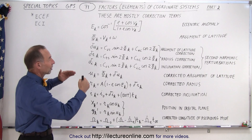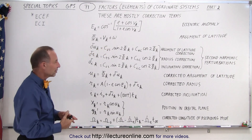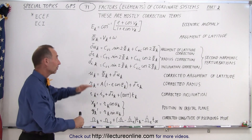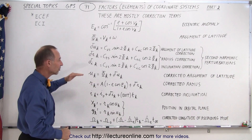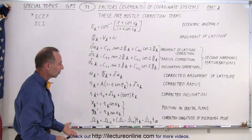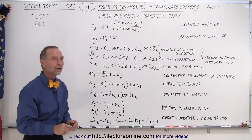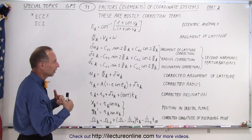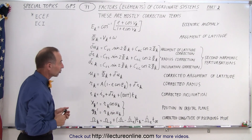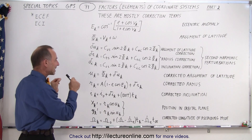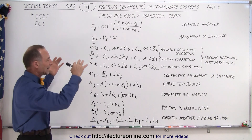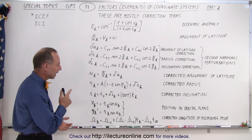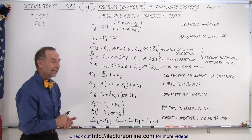Each one of these arguments would take an entire video to explain in detail, which we plan to do later on, so we'll come back and show exactly how these calculations are done. Right now this is more of an awareness situation — these are the values being calculated, primarily correction terms used to find the exact position of the satellite in the Earth-fixed, Earth-centered coordinate system.